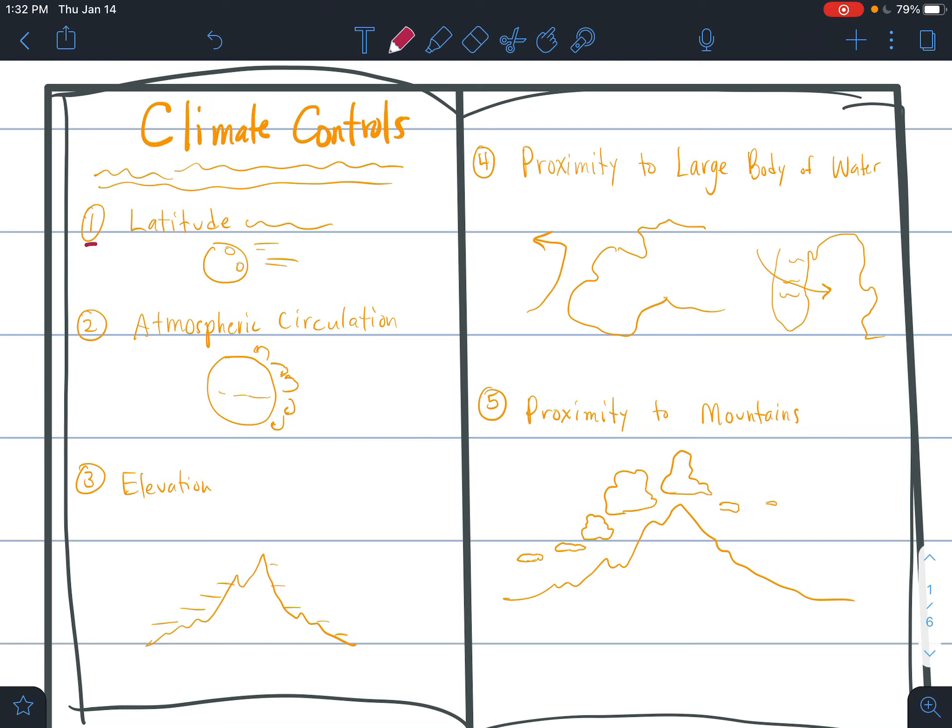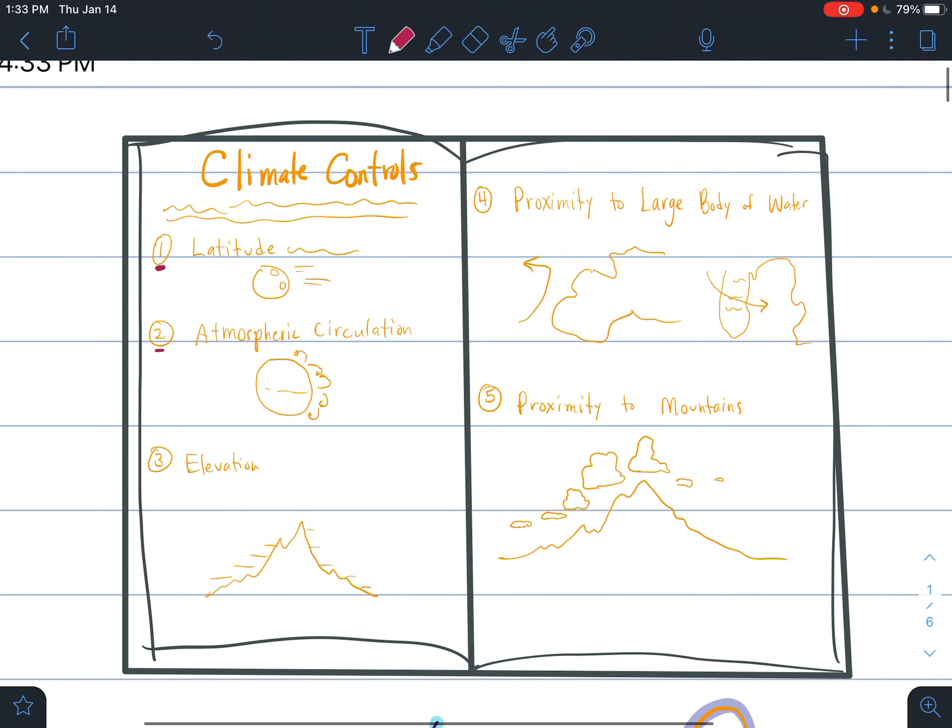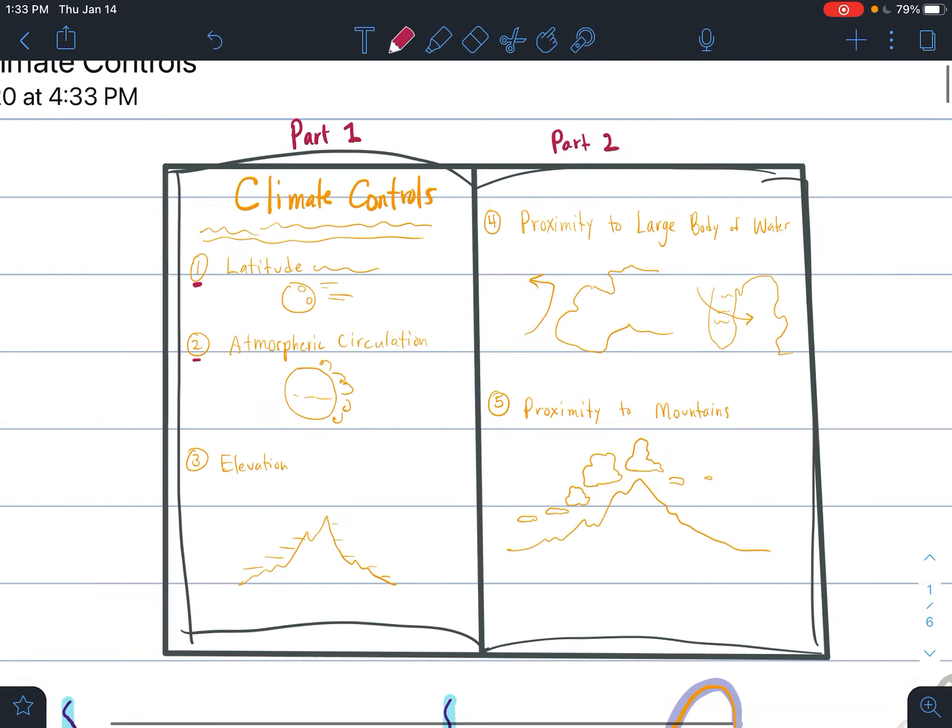Now, we've already looked and learned about property number one and two. We're going to expand upon these and add three, four, and five onto there. But we're going to do this in a two-part series. So our first video here will be part one, and then we'll turn the page and do the fourth and fifth control in part two. So be on the lookout for that.